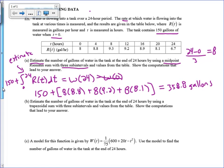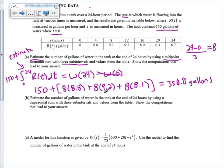Now we're going to do something new here. We're going to estimate the number of gallons of water in the tank at the end of 24 hours by using a trapezoidal sum. Now this is technically not a Riemann sum, but it's still a powerful approximation tool.